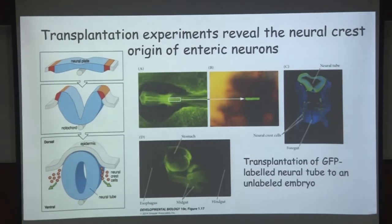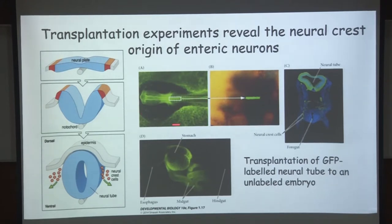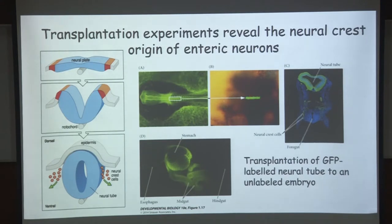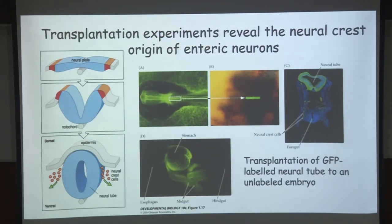How did people come to know this? They took a chick embryo entirely labeled with green fluorescent protein (GFP) and transplanted a section of its neural tube into another unlabeled chick embryo. They let it develop and then cut a cross-section through the middle. You can see the neural tube from that region is labeled in green, and importantly you see green dots surrounding the gut tube below the neural tube. These green cells surrounding the gut make the enteric nervous system, confirming it came from neural crest cells of that specific region.